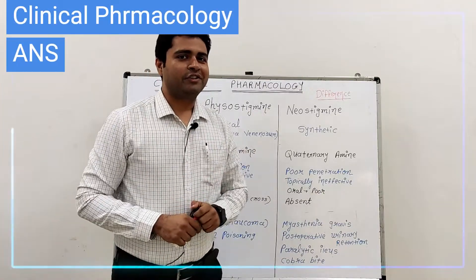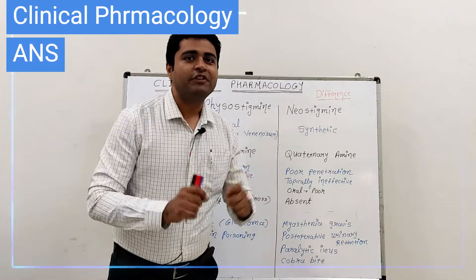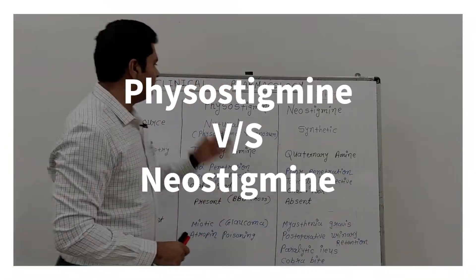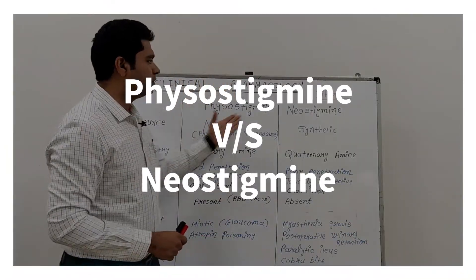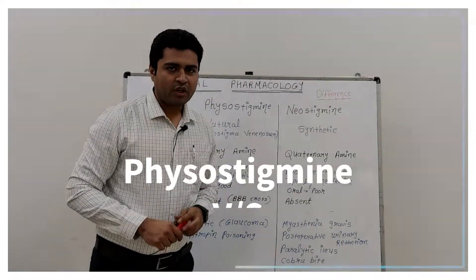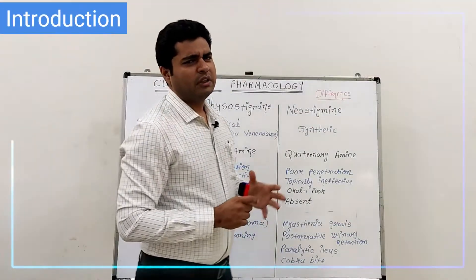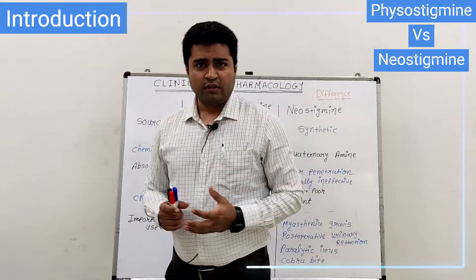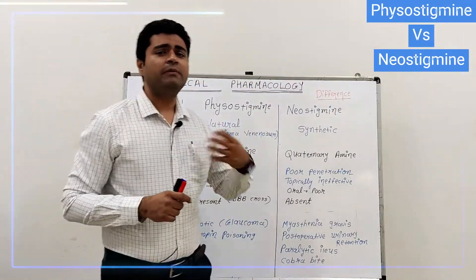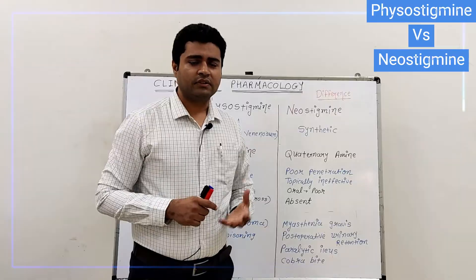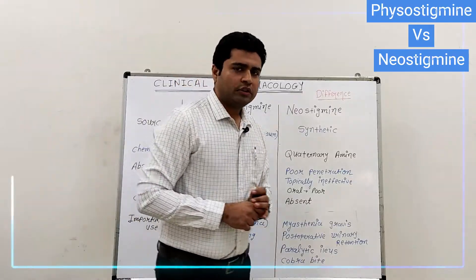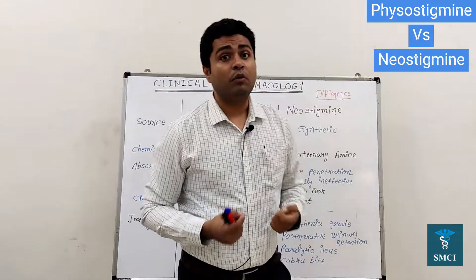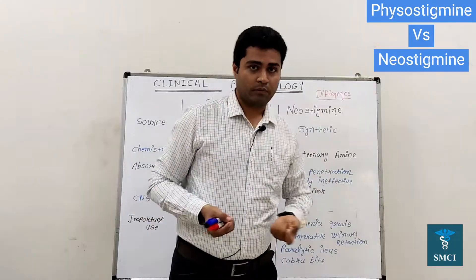Hello friends. In this video we are going to discuss the difference between two drugs of the same class: physostigmine and neostigmine. Both are anticholinesterase type of drugs, meaning they inhibit the cholinesterase enzyme. So they belong to the parasympathomimetic group of drugs.